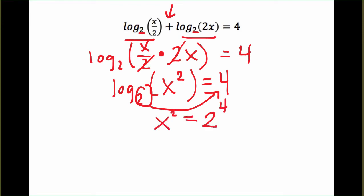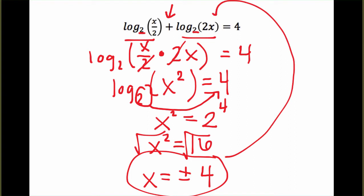So we end up with 2 to the 4 equals x squared. 2 to the 4 is 16. And so to solve this for x, we can just take the square root of each side. Now when you do take the square root, it should be a positive or a negative value. But when we check our answers in each of these,